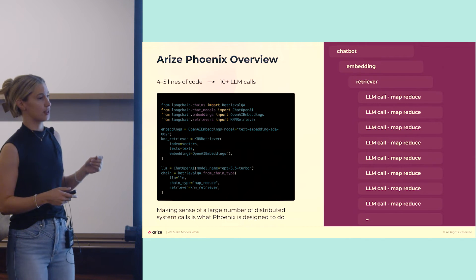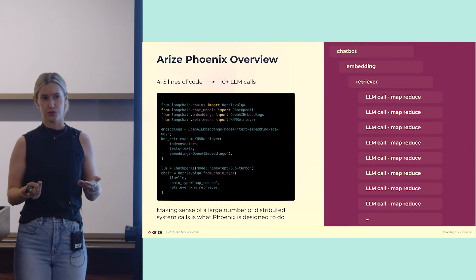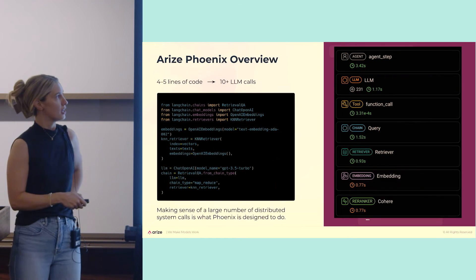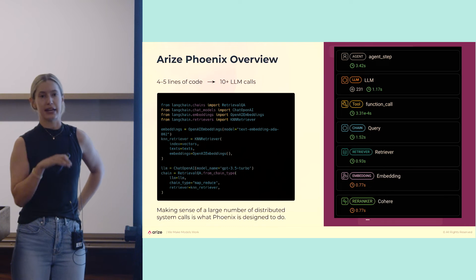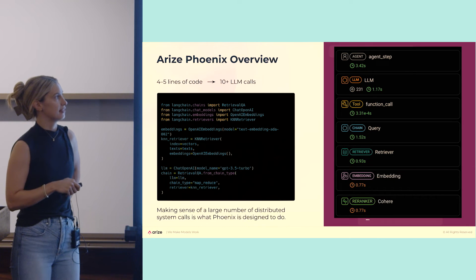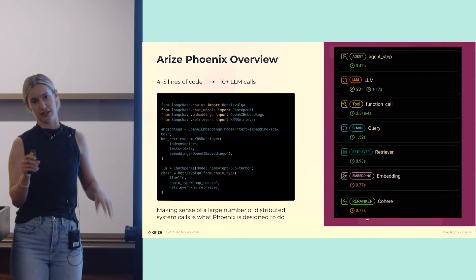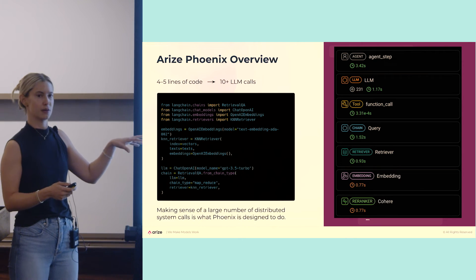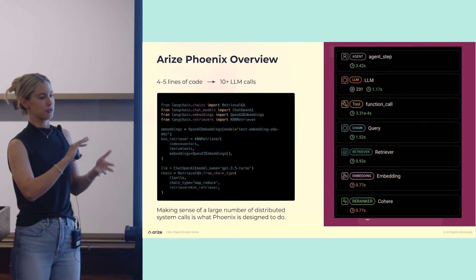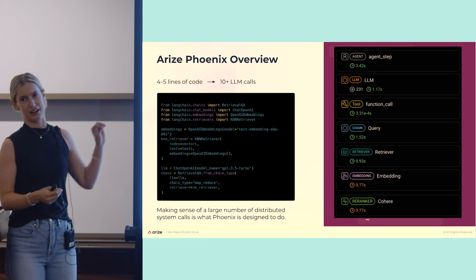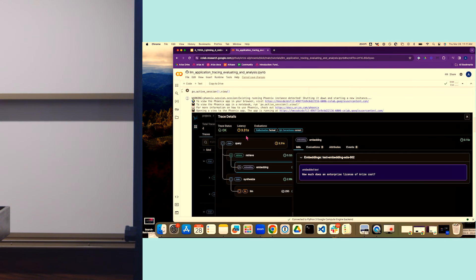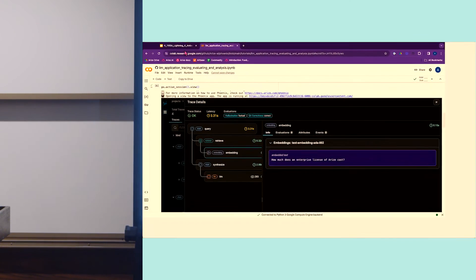Arize has an open source offering called Phoenix, which is an AI observability tool you can start using today. I have a demo set up. Essentially, every time you use a large language model with your full application system, you can track your individual steps. This is an example of different span types — you'd have your agent, your LLM, your embedding — and you can have evaluation metrics set up for each one. We care about latency and token count, and you can set up monitors on those, but those don't necessarily tell you how good a response is — for that you need different evaluation metrics.